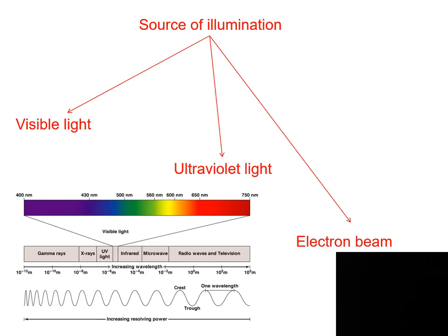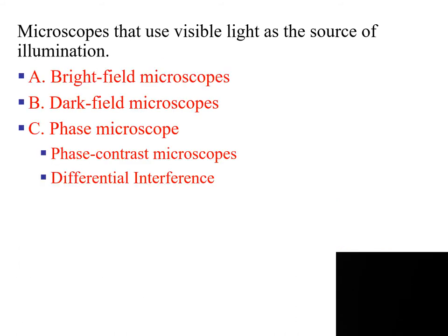The source of light determines the category of microscope. We're going to talk about three categories: the first one is visible light, the second one is ultraviolet light, and the third one is electron beam. Under visible light, the microscopes include dark field microscopes, bright field microscopes, and phase microscopes, and we will discuss each one.